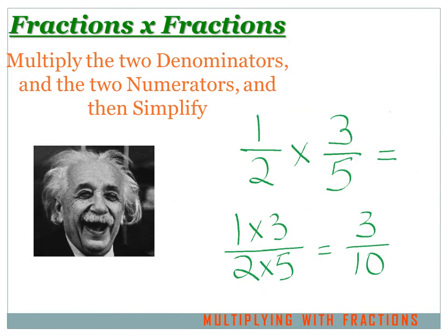The easiest multiplication with fractions is when we multiply one fraction by another fraction. All we have to do is multiply the two denominators by each other, and then multiply the two numerators by each other, and then sometimes we have to simplify those results. Here's an example.